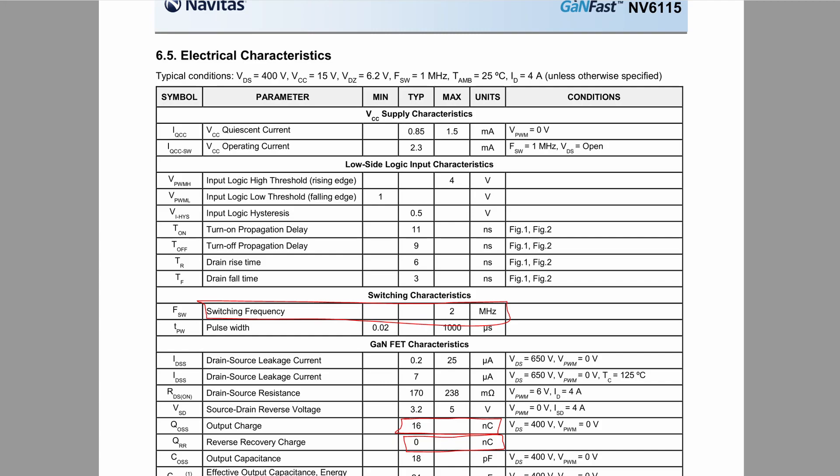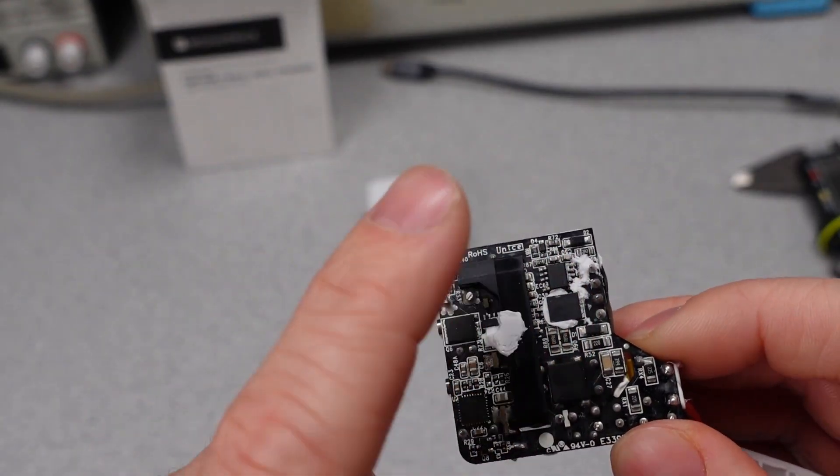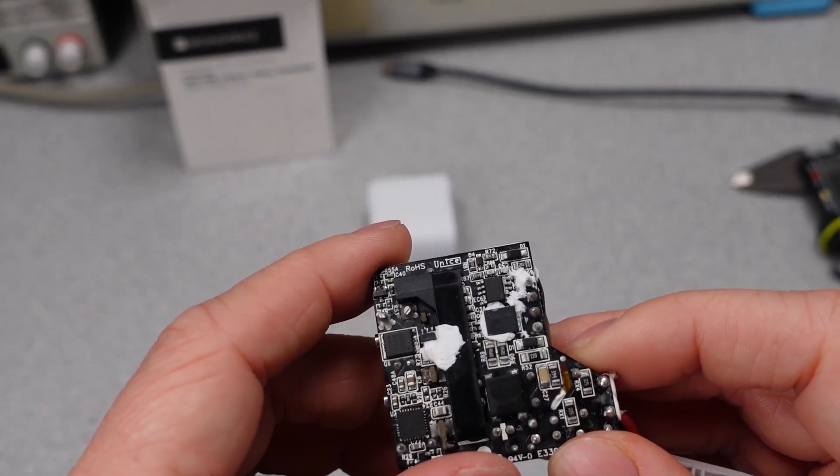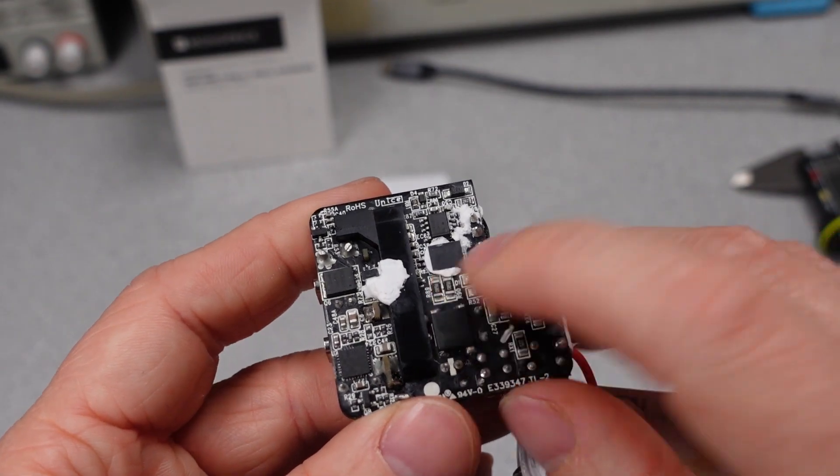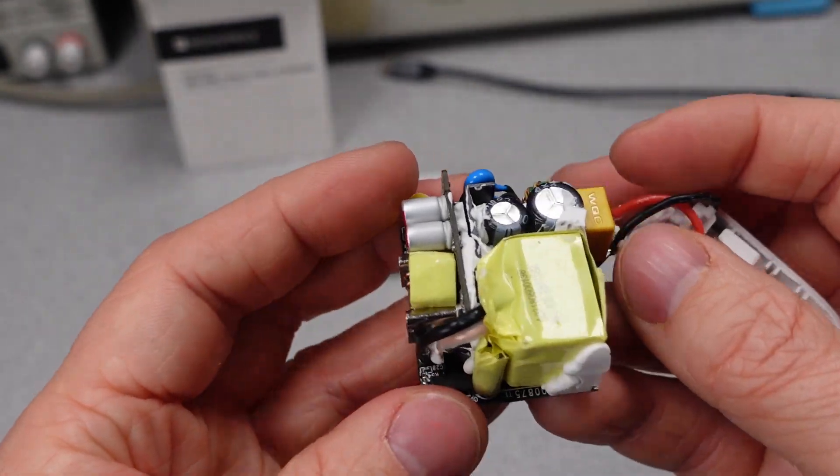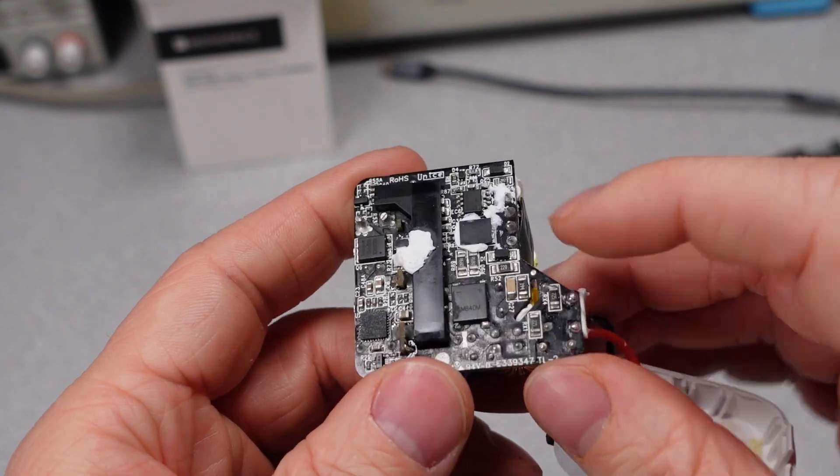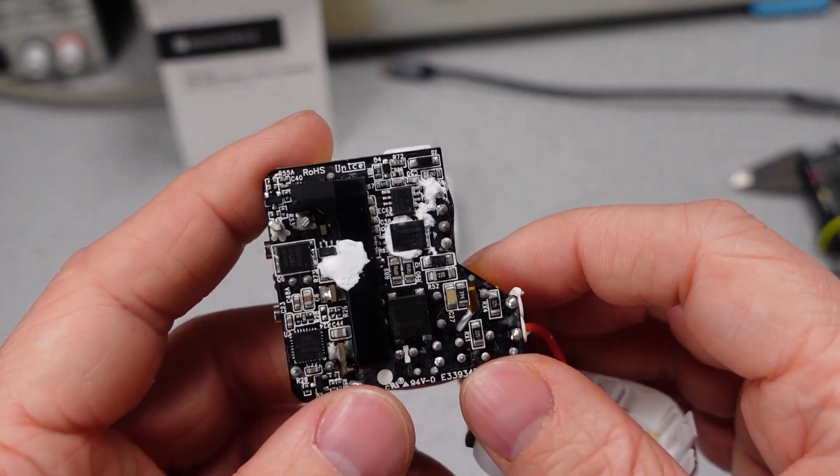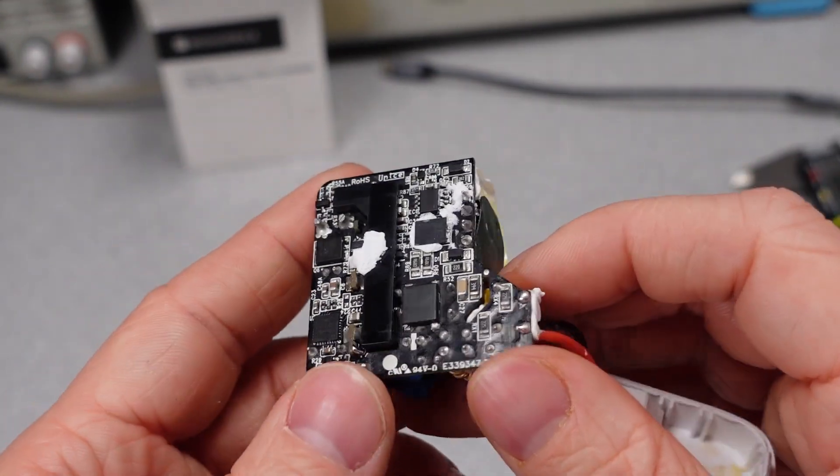One of the other advantages is there is no reverse conduction diode. So the reverse conduction period is zero. So gallium nitride is definitely one of the future technologies. It's going to be pushing these things to smaller sizes and more efficiency levels going forward in the future. So definitely something to keep an eye on. Probably a topic worthy of its own video.